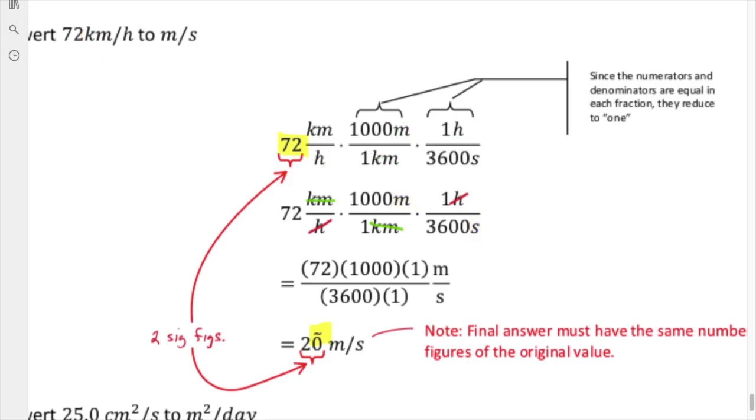When we do all the math, we get 20 meters per second. Here's the key: we have a tilde, and the reason why is because the 72 has two sig figs, so the final answer also has to have two sig figs, which means that zero must be made significant, and therefore we add the tilde to it.